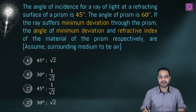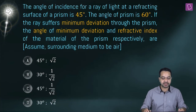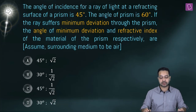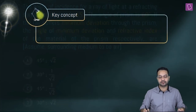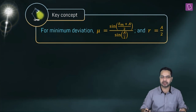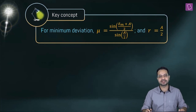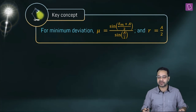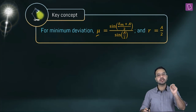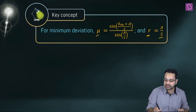The angle of incidence for a ray of light at a refracting surface of a prism is 45 degrees. The angle of prism is 60 degrees. If the ray suffers minimum deviation through the prism, find the angle of minimum deviation and refractive index of the material of the prism, assuming surrounding medium to be air. The key concept: for minimum deviation, μ = sin((δ_m + A)/2) / sin(A/2), where δ_m is the angle of minimum deviation, A is the angle of prism, and also r = A/2.